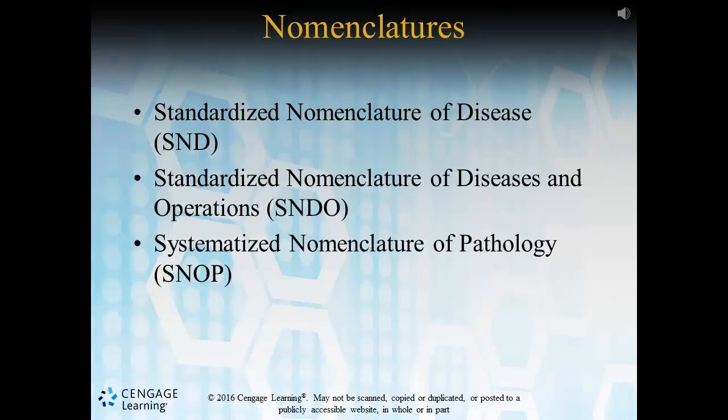The Standardized Nomenclature of Diseases and Operations, or SNDO, was developed in 1936 and was largely based off of the SND classification. The only difference is that there is an additional axis added, which is operations.